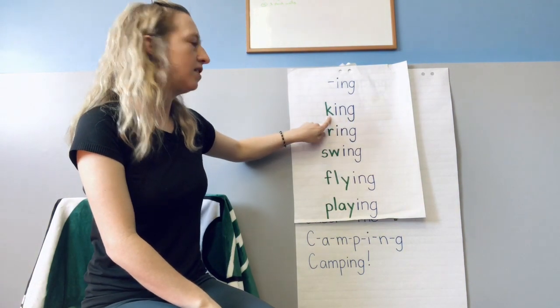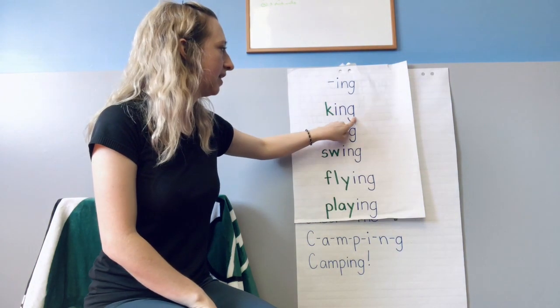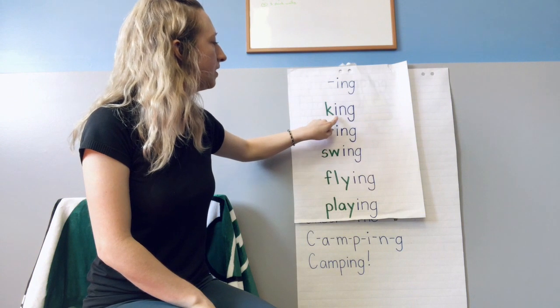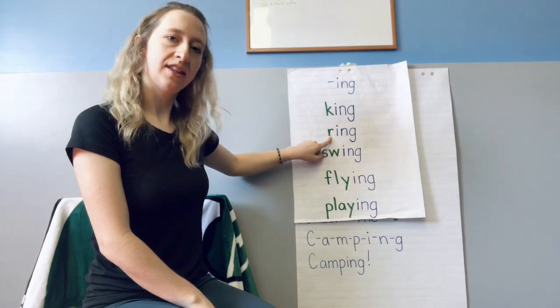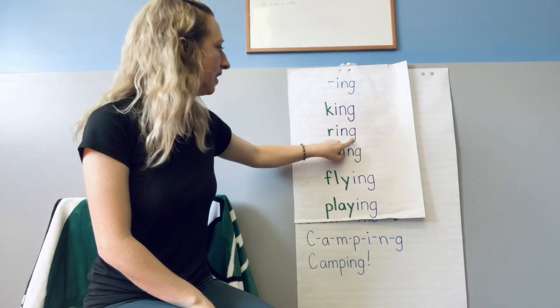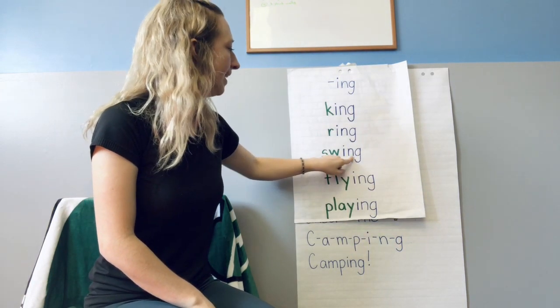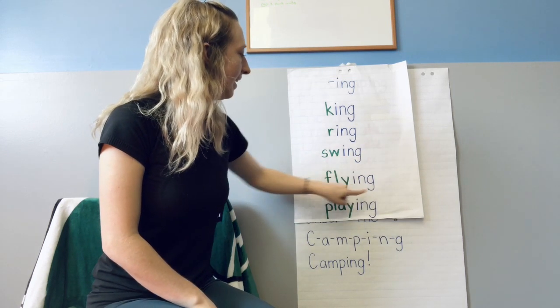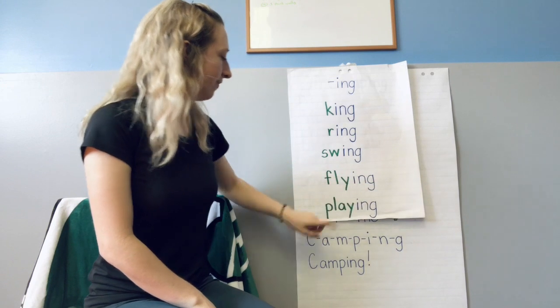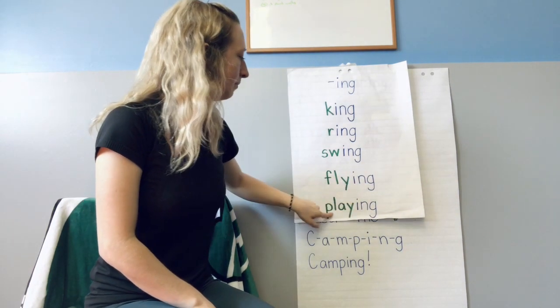This word here, well we know that the K makes a K sound and we see that -ing. Put it together. K-ing, king. Then we can look at the next word. R-ing, ring. Swing, swing. Flying, flying. And of course our last sight word, playing, playing.